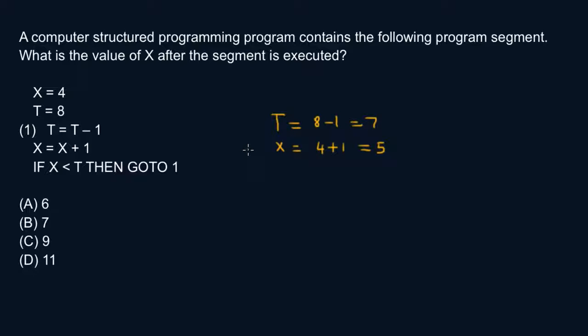Alright. So if x less than t, so 5 is definitely less than 7. So this statement is true. Therefore, we have to go back to 1. So this is 1 right here. We have to go back to that and go through the loop again.